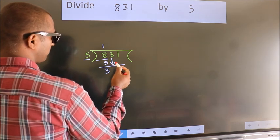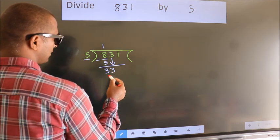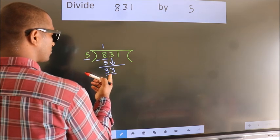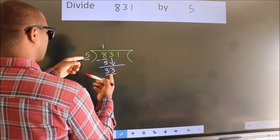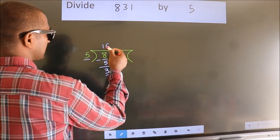bring down the beside number. So, 3 down. So, 33. A number close to 33 in 5 table is 5, 6, 30.